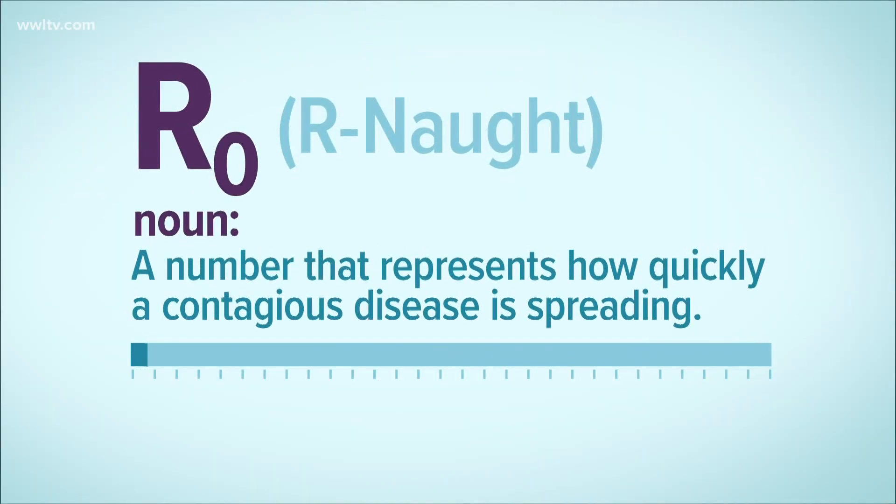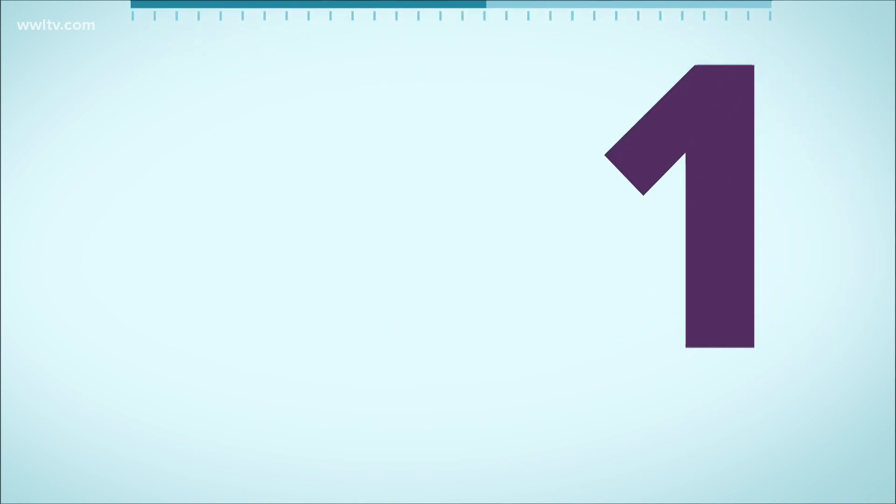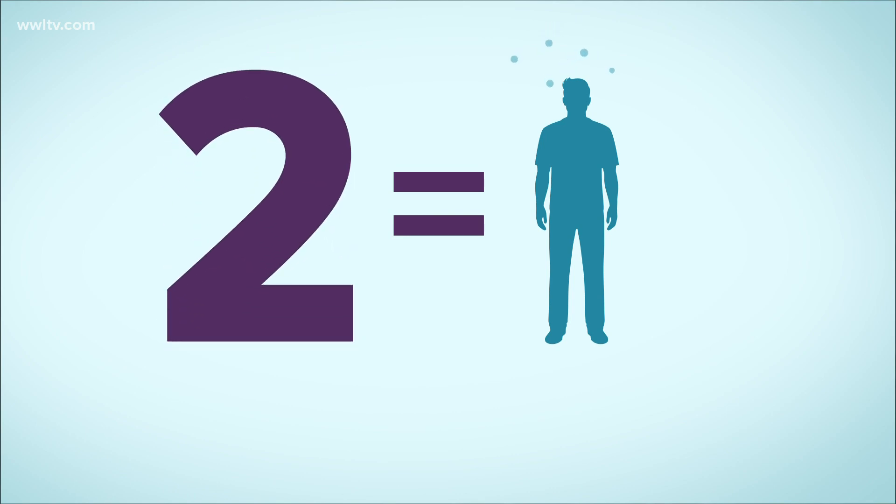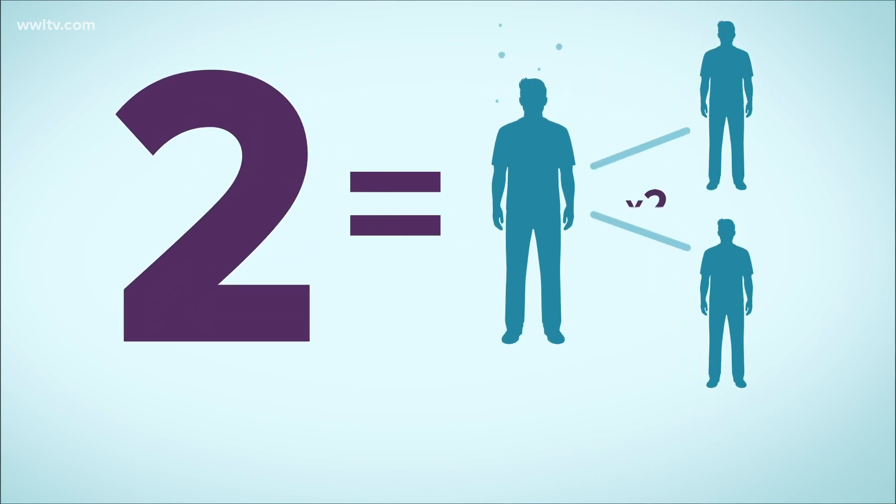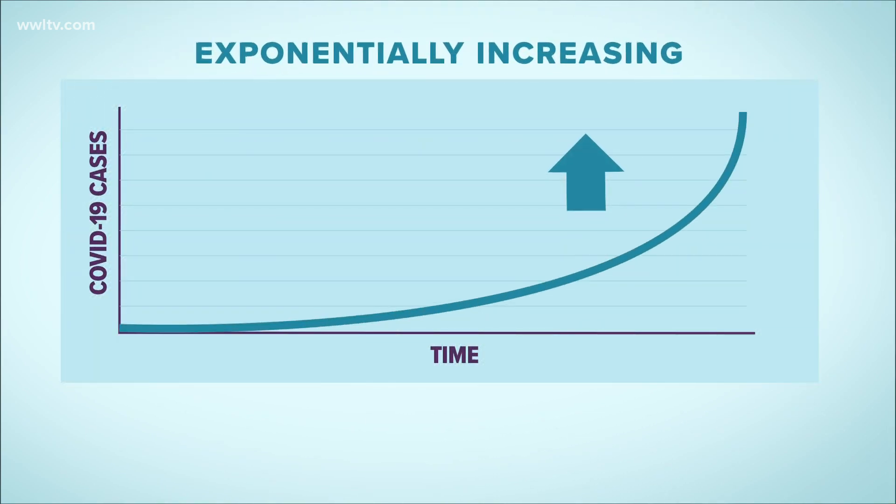R-naught is a number that represents how quickly a contagious disease is spreading. To understand it, all you have to do is think about the number one, a single case of coronavirus. If the R-naught is above one, that means every person with the illness is infecting more than one other person, and that means the disease is exponentially increasing.